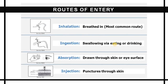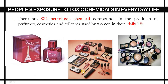There are four routes by which hazards can enter the human body. First, inhalation — by breathing. Second, ingestion — by swallowing via eating or drinking. Third, absorption — drawn through skin or eye surface. Fourth, injection — puncture through the skin. These four routes are inhalation, ingestion, absorption, and injection.